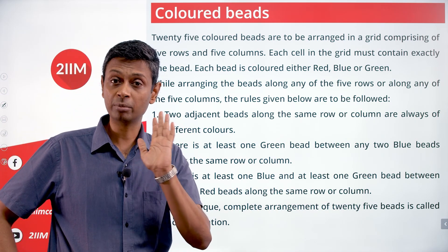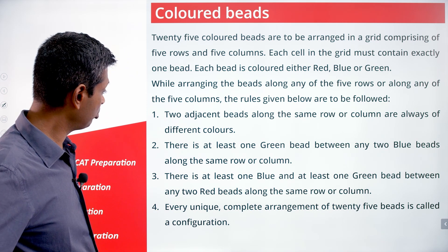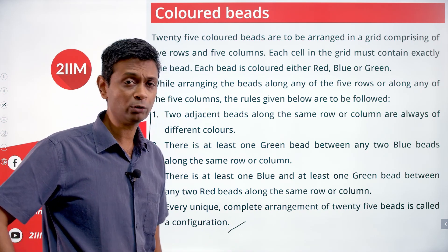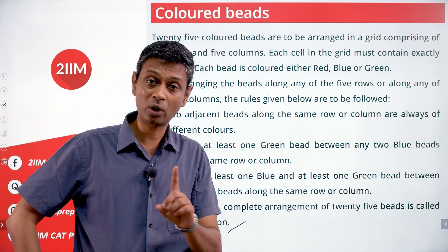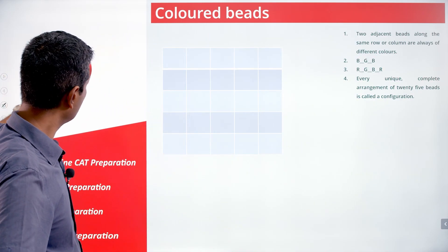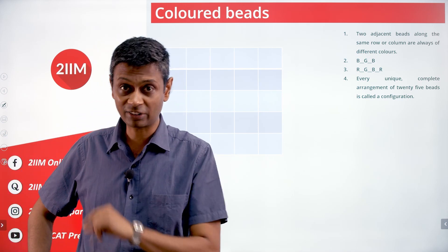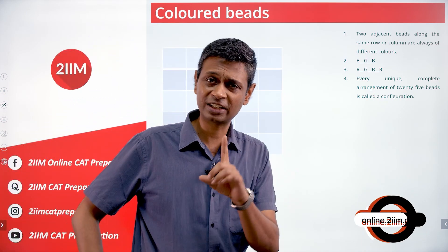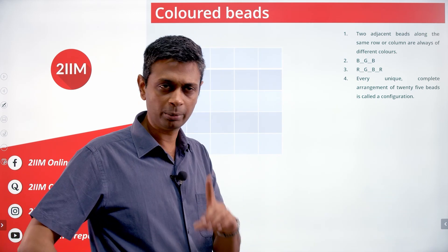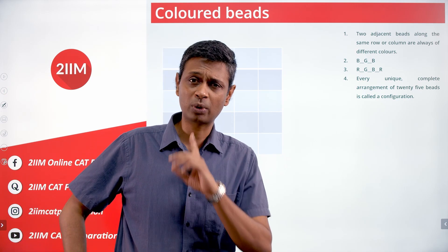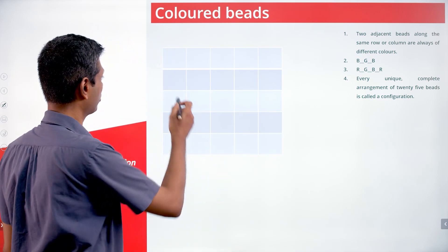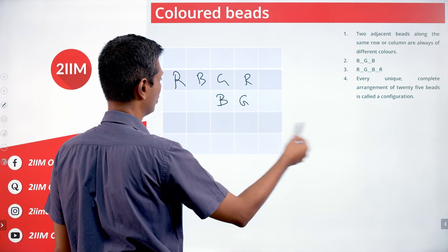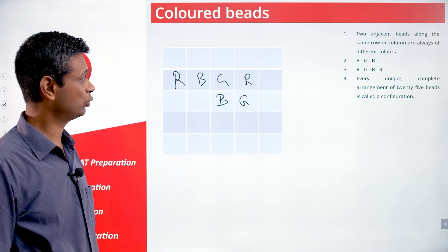So if red appears, you need both blue and green in between at least one of each. Every unique complete arrangement of 25 beads is called a configuration. The three key rules are: no two adjacent beads the same color; if two blues appear, at least one green must be between them; if two reds appear, at least one blue and at least one green must be between them. This is not a problem where we can simply fill a grid — we have a framework we must work within.